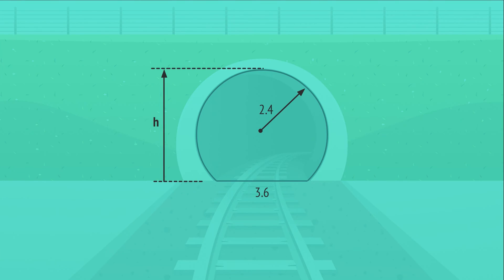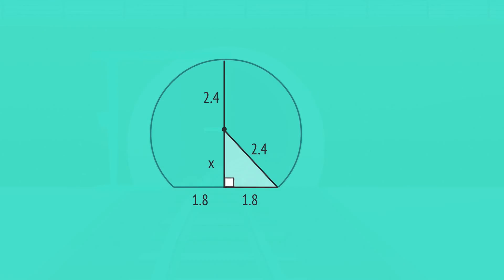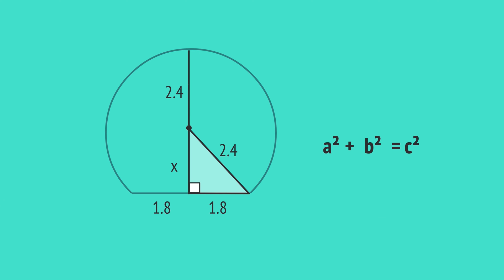First, draw a diagram with the supplied information. The height of the tunnel is equal to this distance x plus the radius of 2.4. Notice that x is part of this right-angled triangle, which has a hypotenuse of 2.4 and a base equal to half the tunnel's base. So we can use Pythagoras to calculate x.